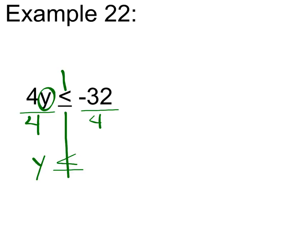A negative divided by a positive is a negative. 32 divided by 4 is 8. Your final answer: y is less than or equal to negative 8.